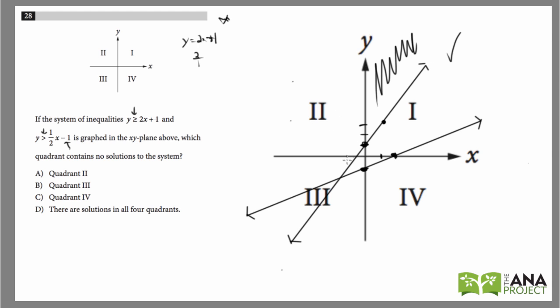How about quadrant 2? This area over here is greater than this line and it's greater than this line. So that's a solution to the system. This area here is greater than both lines. So that's a solution.